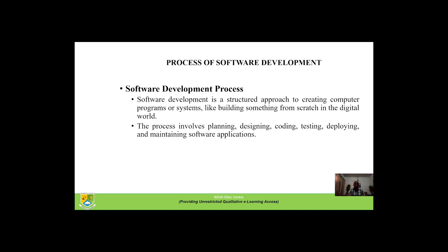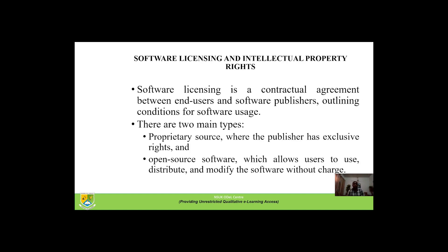Software licensing is a contractual agreement between end users and software publishers, outlining conditions for software usage. There are basically two main types: proprietary software, where the publisher has exclusive rights, and open source software, which allows users to use, share, distribute, and modify the software components without charge.